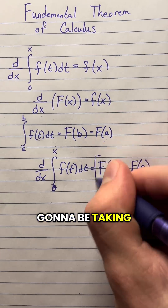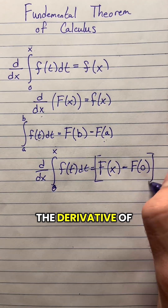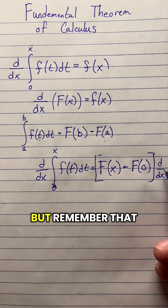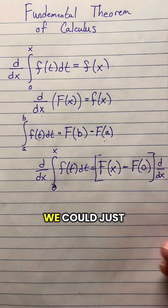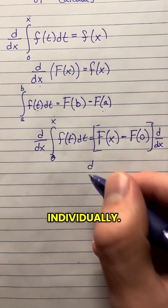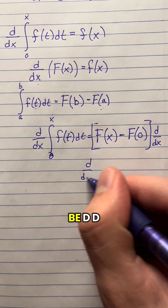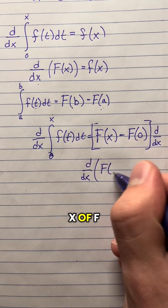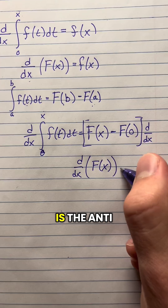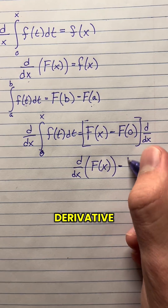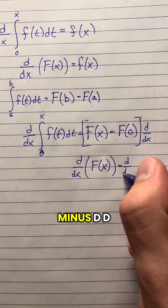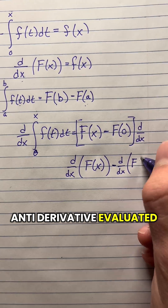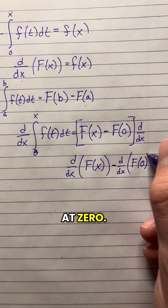And we are going to be taking the derivative of this entire quantity. But remember that we could just take the derivative of the parts individually. So that's going to be d/dx of F of x, where capital F is the antiderivative, minus d/dx of our antiderivative evaluated at 0.